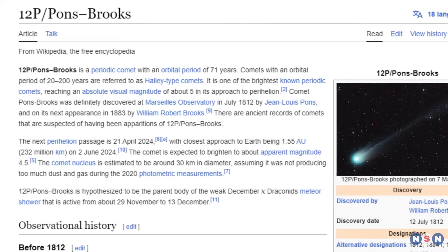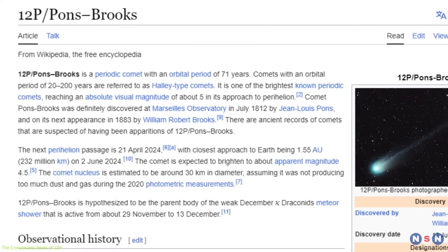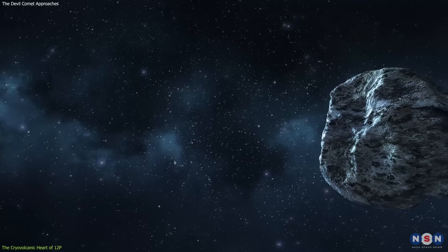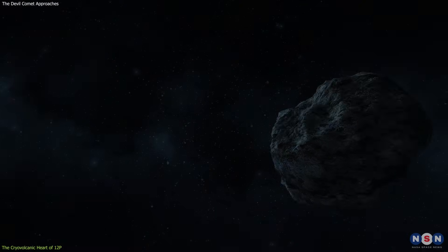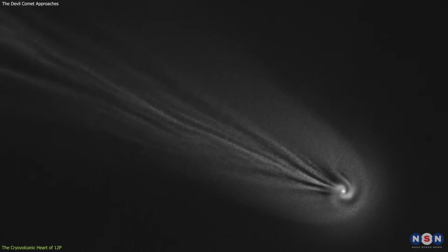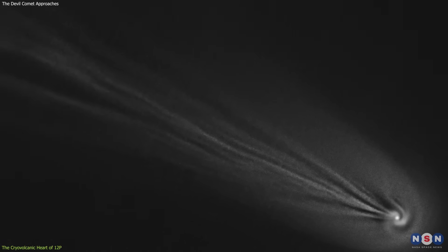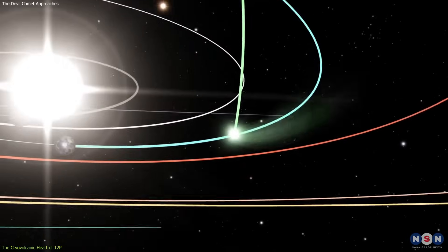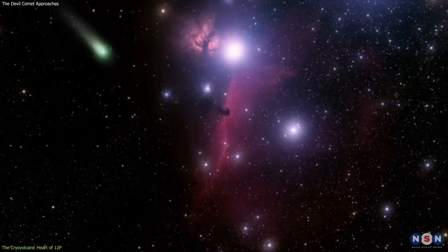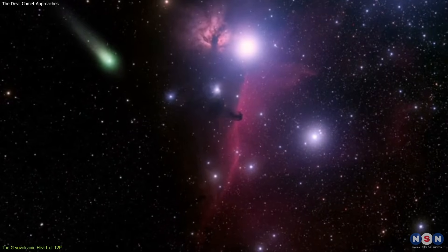Comet 12P Pons-Brooks, affectionately dubbed the Devil Comet, is not just another celestial wanderer. This icy behemoth, spanning a staggering 10.5 miles in width, follows a highly elliptical orbit around our Sun, making its grand return approximately every 71 years.